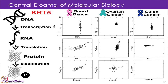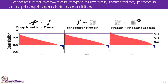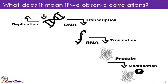These are just two examples. If we look more globally, there is a wide range — for copy number to transcript correlation, some genes are highly correlated, others are even anti-correlated. We see this wide range for every comparison: both transcript to protein and protein to phosphoprotein. So what does it mean when we see a correlation in one case but not in another?